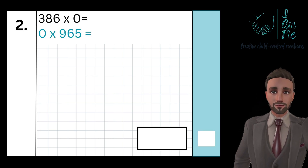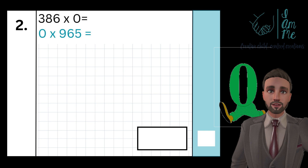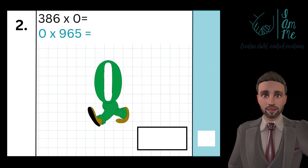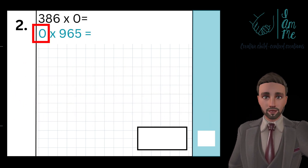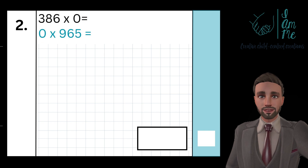How to multiply by zero. This is going to be a short video because anything multiplied by zero is zero. Regardless of whether the zero comes first or second, it is always zero.